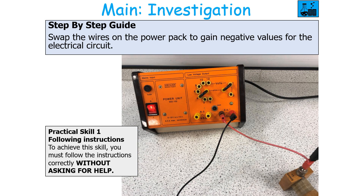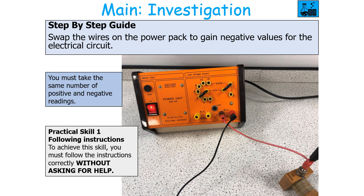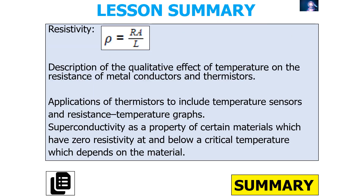Remember to swap the wires on the power pack to gain negative values for the electrical circuit, and you must take the same number of positive and negative readings. Now that you have your values of current and potential difference, you can use graphical methods to work out resistance, work out the cross-sectional area of your wire from the diameter, measure the length with your ruler, and calculate the resistivity. Resistivity rho equals R times A over L: measure R from the current–potential difference graph, work out A from the diameter, and measure L directly.